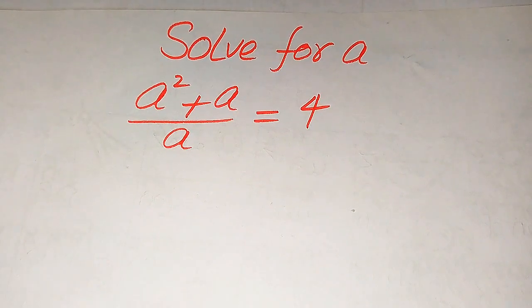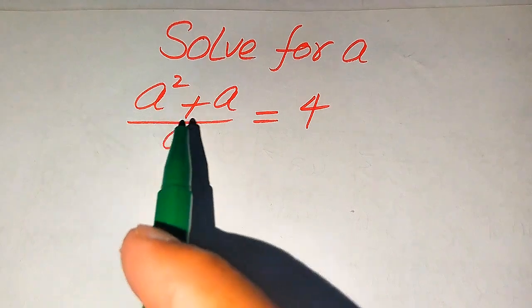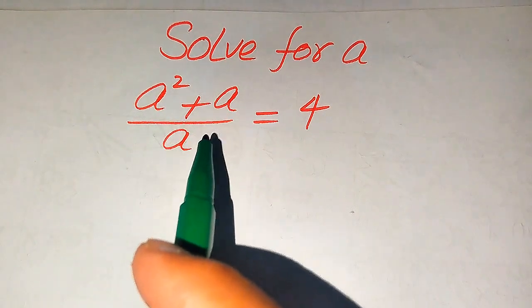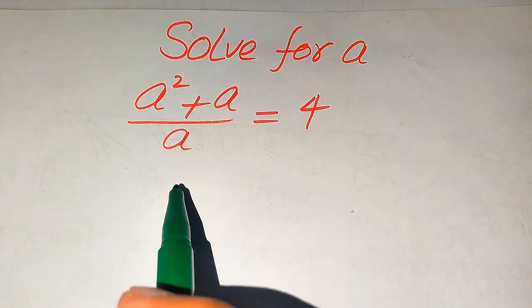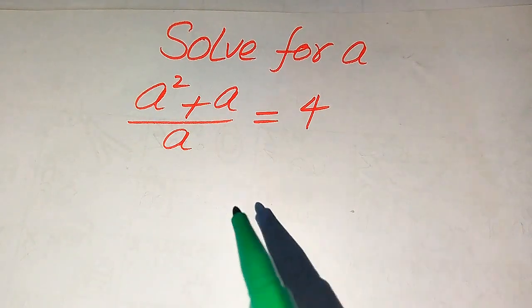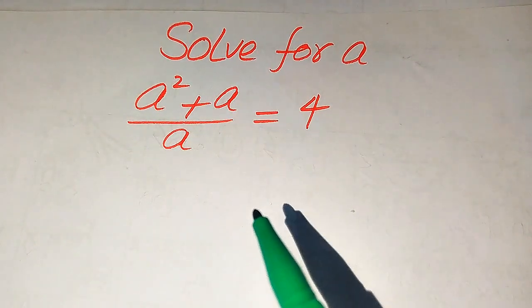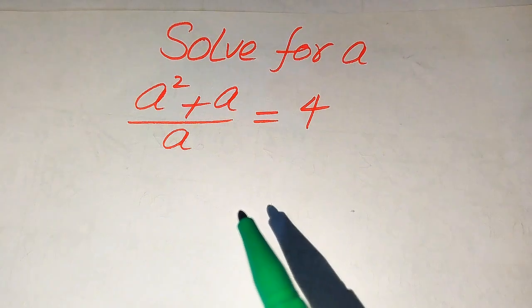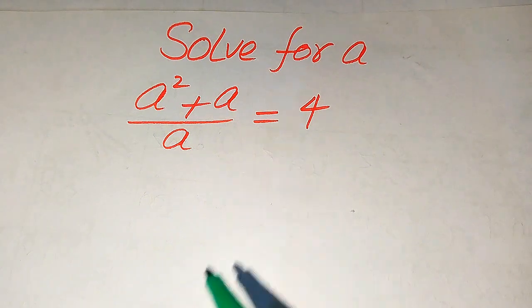Hello everyone. How to solve this problem for the values of a, if we have a squared plus a divided by a equals 4, and we solve this problem for the values of a.